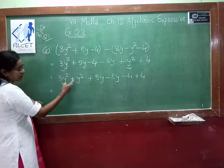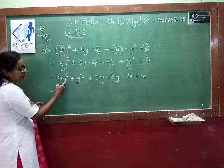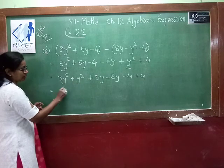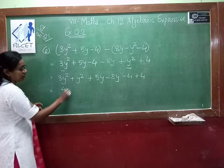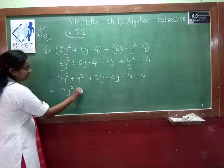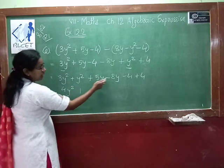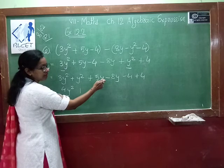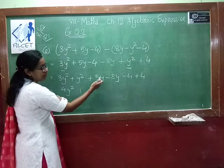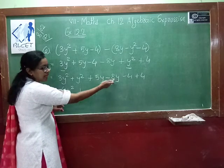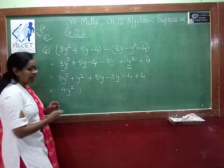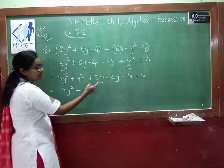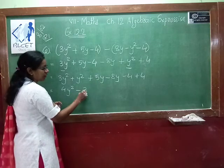So 3y² plus y² — the coefficient of y² is 3, here it is 1, so 3 plus 1 is 4y². Now plus 5 minus 8 — the variables are same, that is y. So plus 5 minus 8: which term is greater? 8. So the answer is minus, and 8 minus 5 is 3y, so minus 3y.